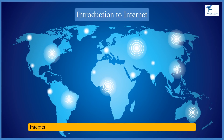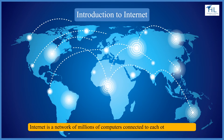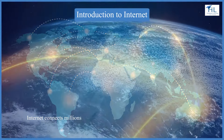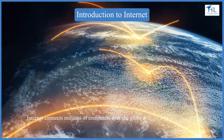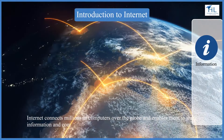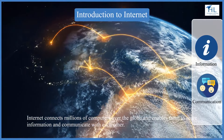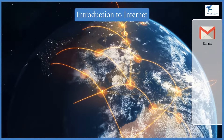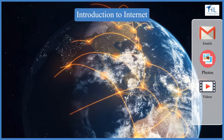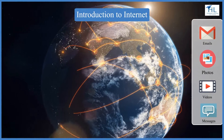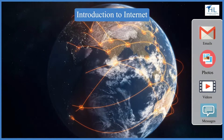The internet is a network of millions of computers connected to each other worldwide. Internet enables millions of computers over the globe to share information and communicate with each other. Using the internet we can send emails, photos, videos, and messages to our loved ones.